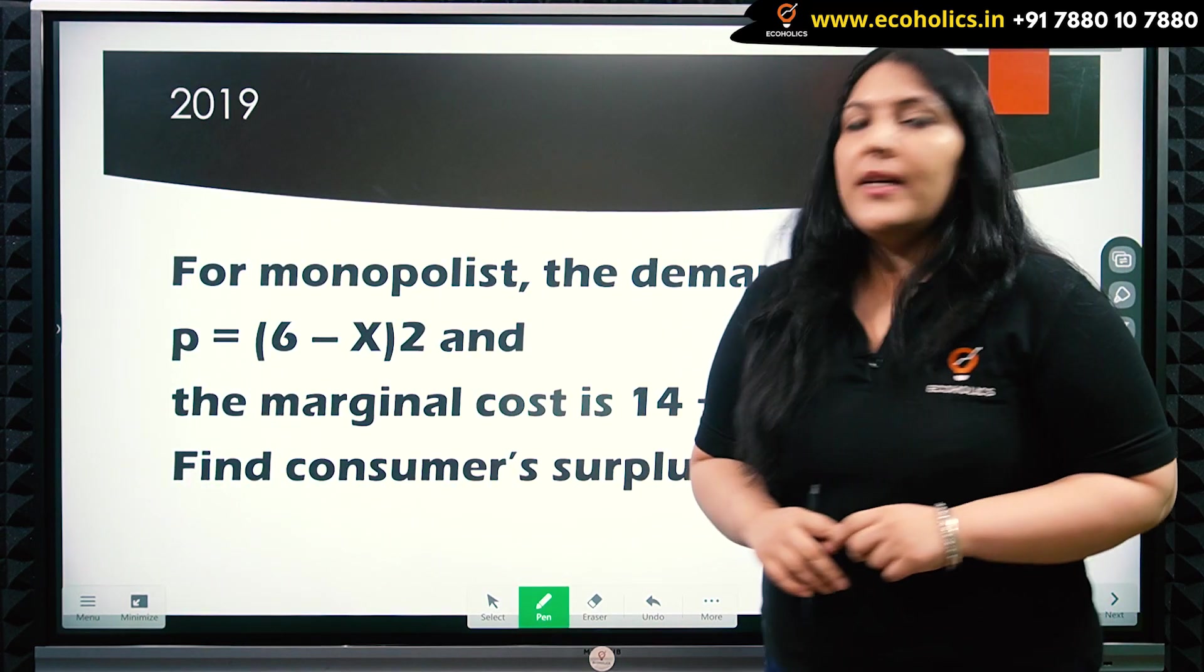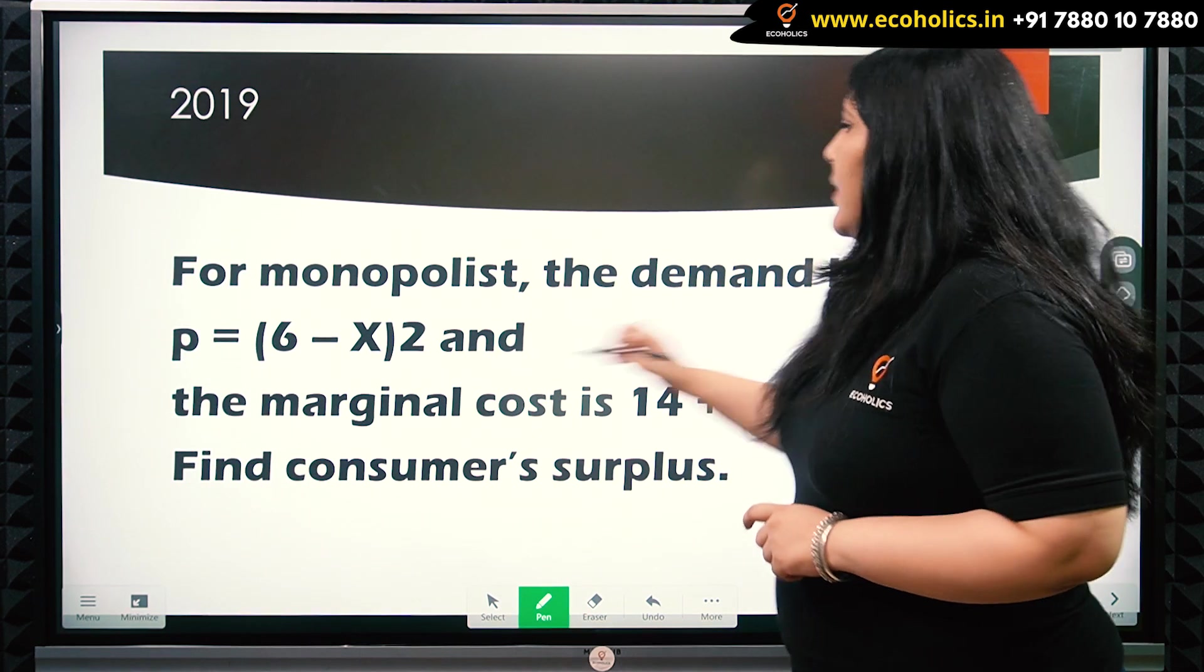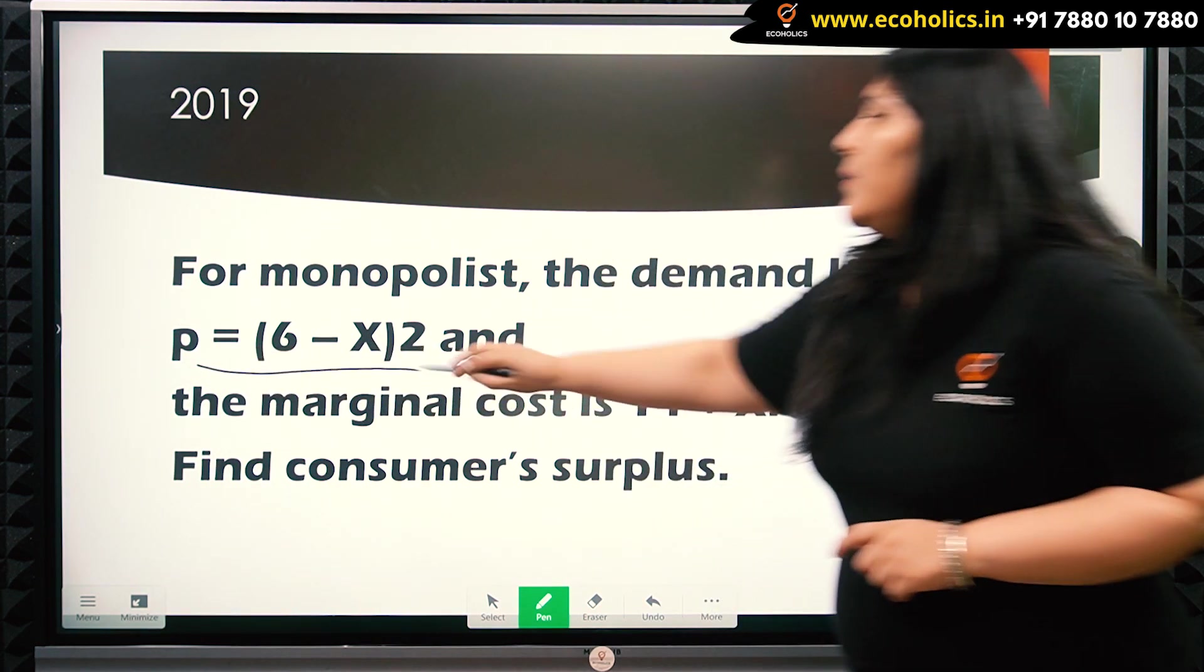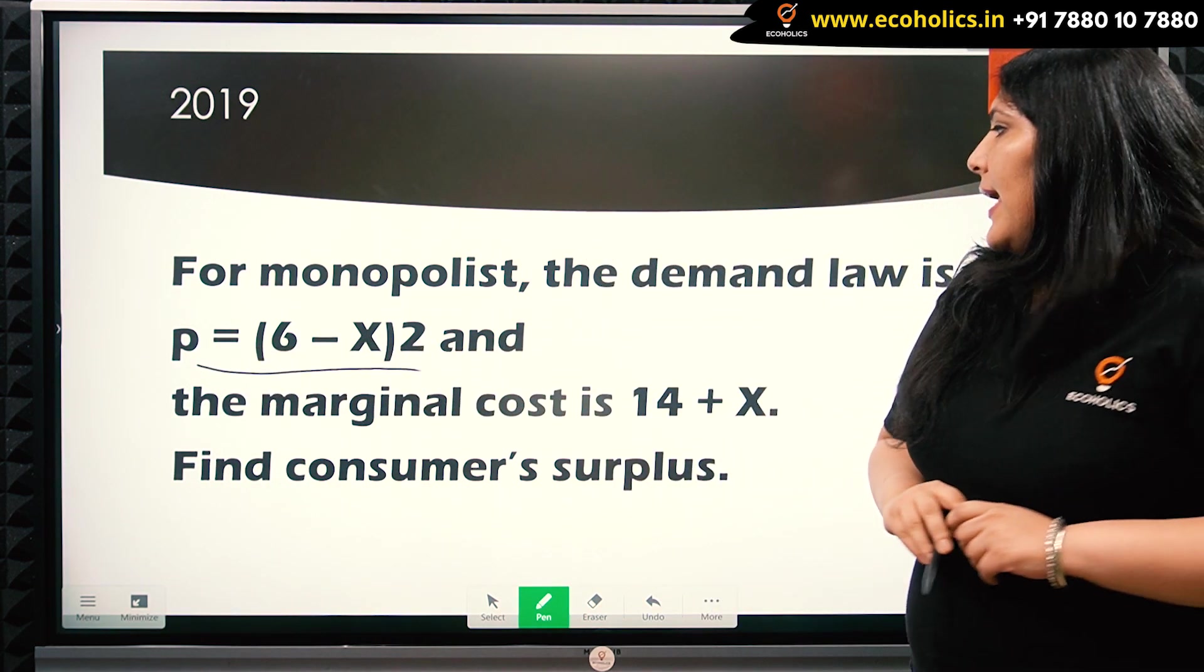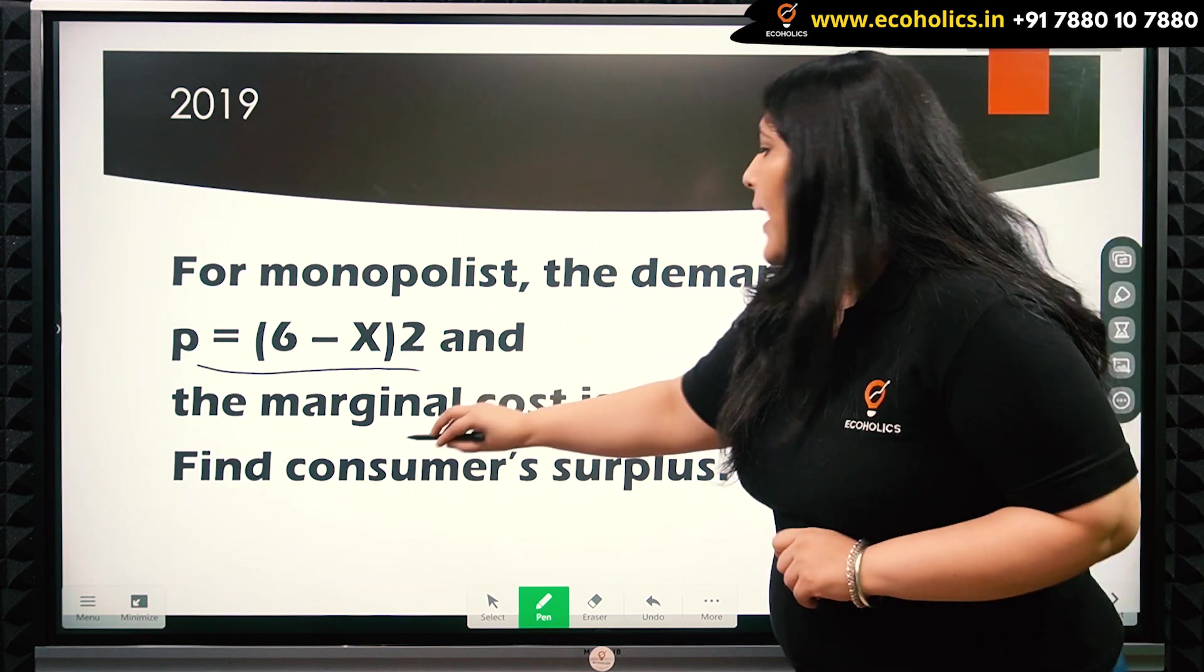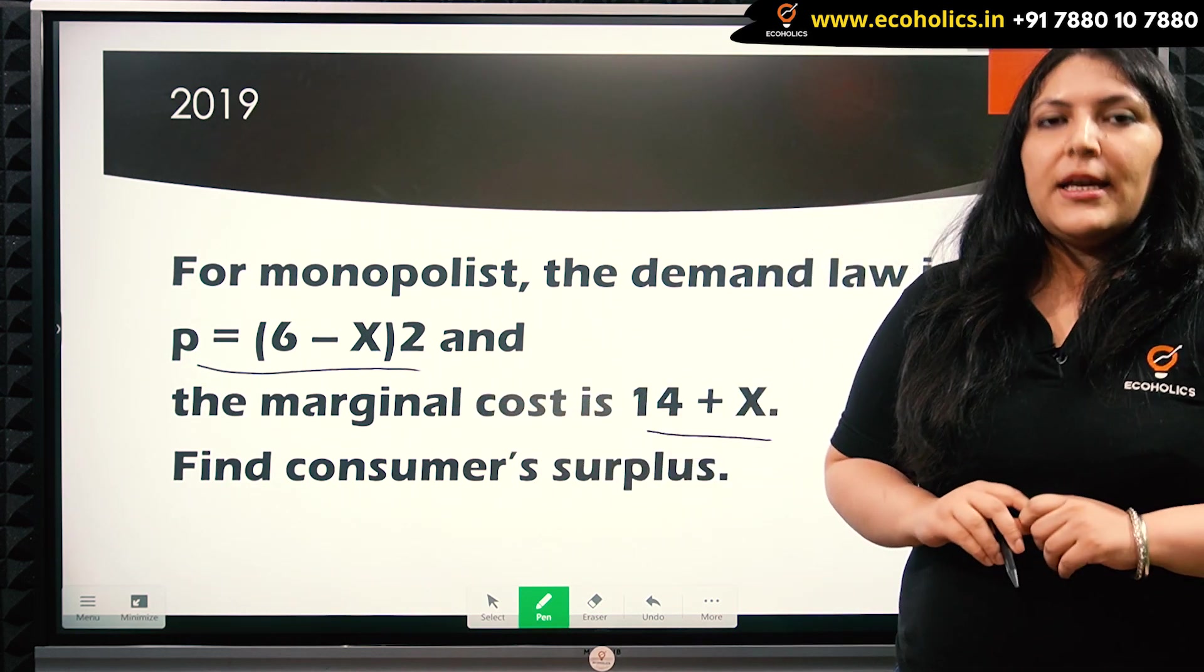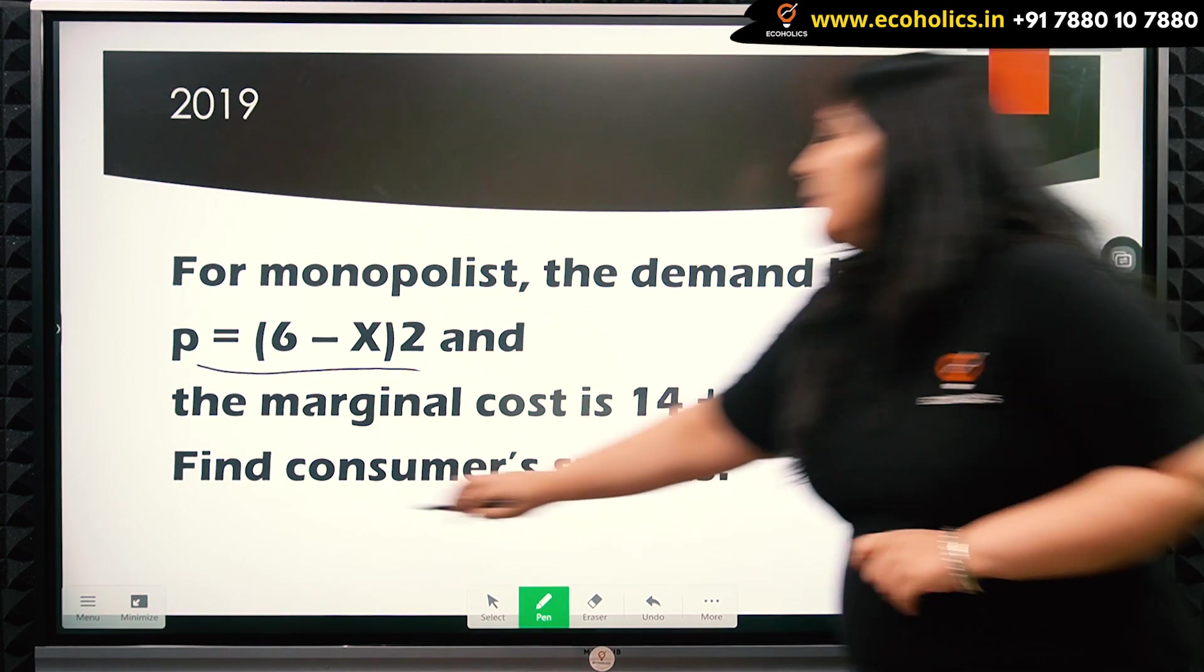The question reads: for a monopolist, the demand curve is P = (6 - x)² and marginal cost is 14 + x. Find consumer surplus.